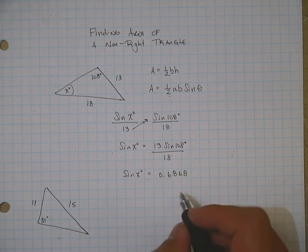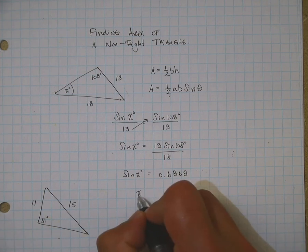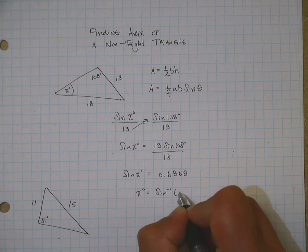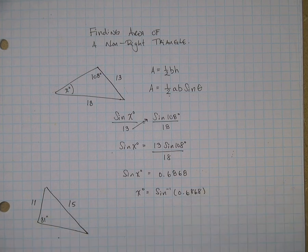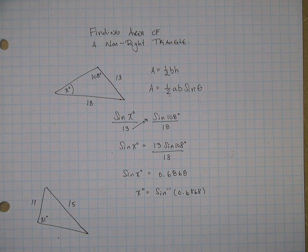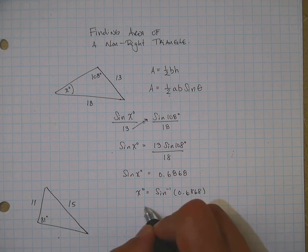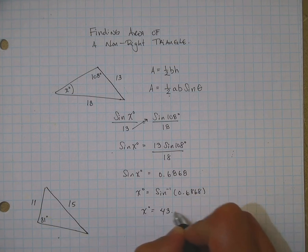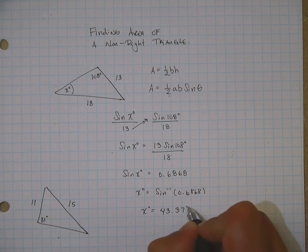Now, how do you get rid of the sine? Well, you do the sine inverse. So, you're going to have to use your calculator. Sine inverse of 0.6868, and that should give you approximately 43.37 degrees.